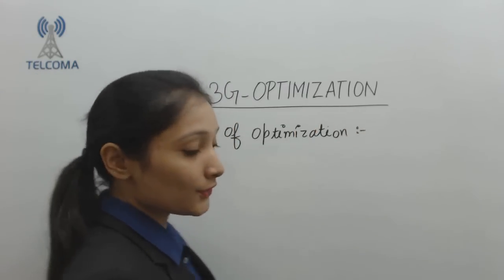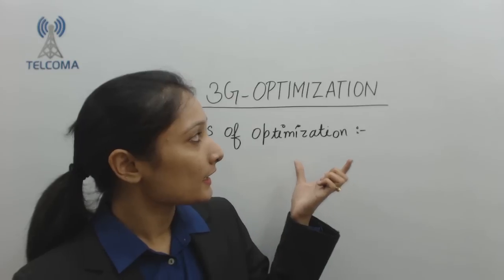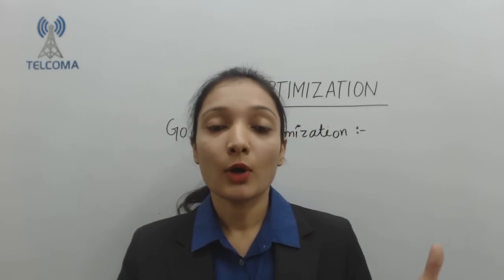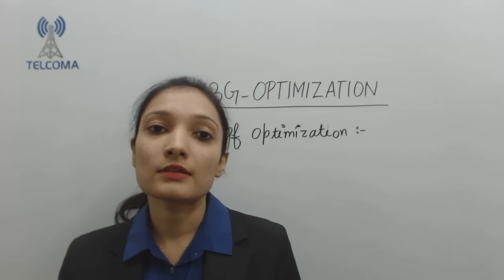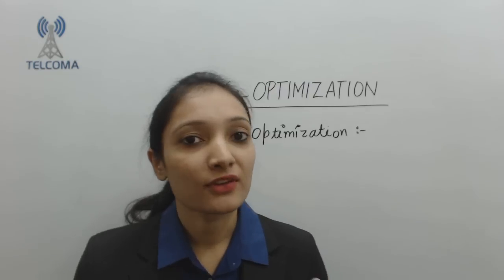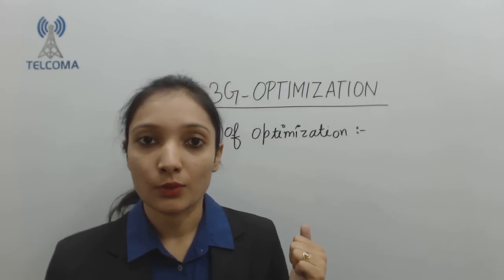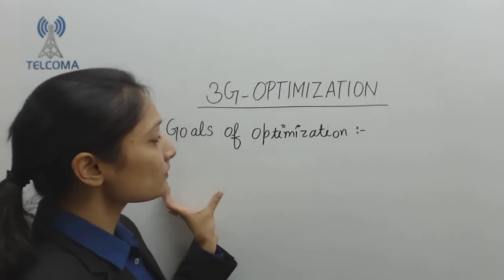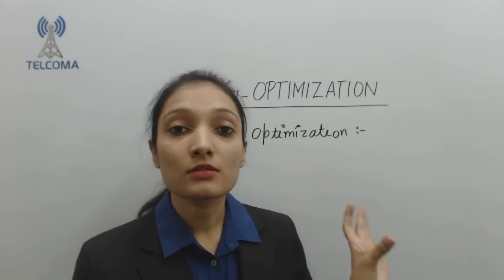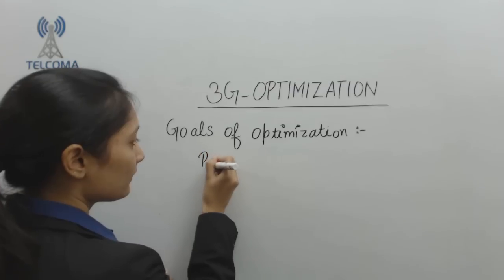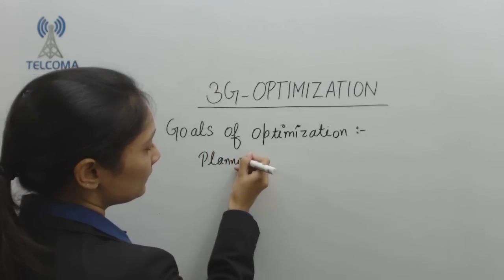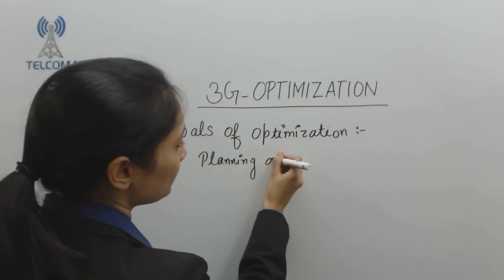The optimization of 3G networks means the system should work according to the requirements of the operator. If those criteria are met, only then will the subscriber be satisfied with the services of a particular network. So when we talk about the goals of optimization, the system should work according to the planning assumptions.